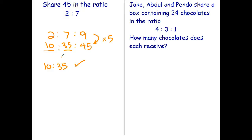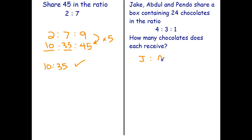Looking at the next question: Jake, Abdul and Pendo share a box containing 24 chocolates, and for some reason they're not sharing them equally. Jake gets four parts, Abdul gets three parts, Pendo gets one part. So how many chocolates does each receive? The setup is: Jake to Abdul to Pendo to total.